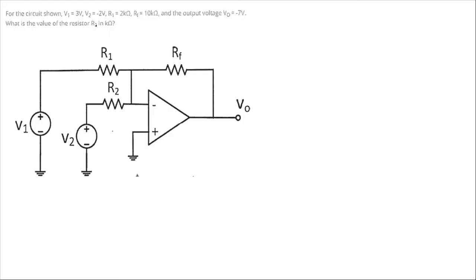In the next circuit we have a summer circuit. It is given that V1 equals 3 volts, V2 equals minus 2 volts, R1 equals 2 kilo-ohm, Rf is 10 kilo-ohm, and the output voltage V0 is minus 7 volts. We are asked to find the value of resistor R2 in kilo-ohms.